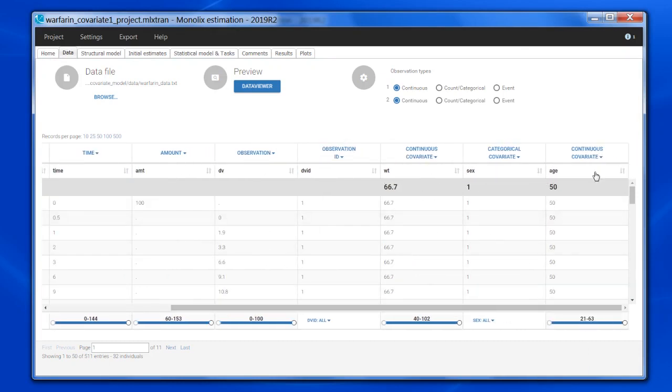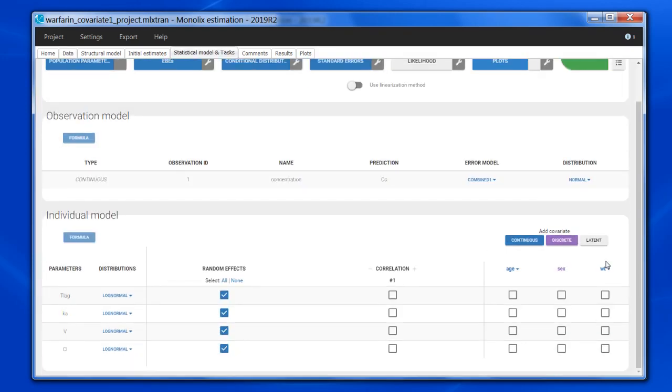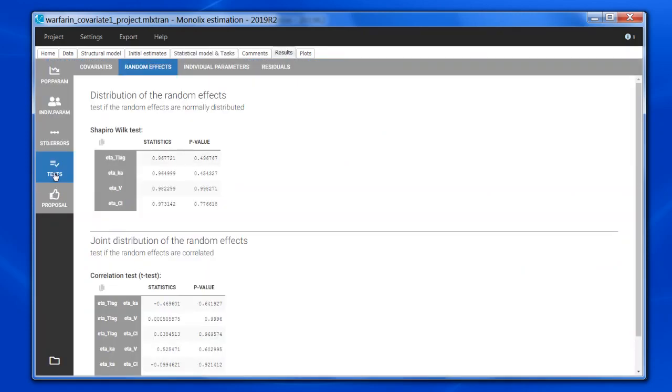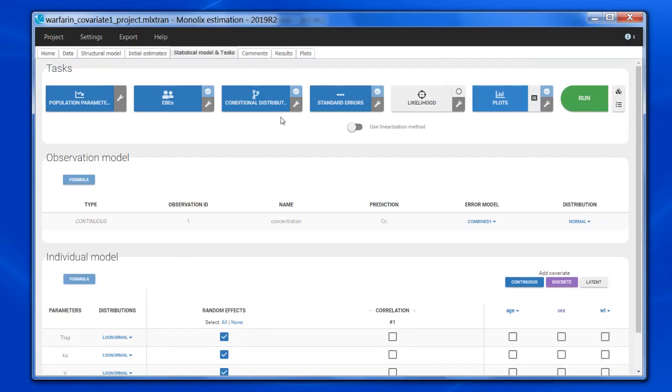Weight, sex and age have been tagged as covariates and are not yet included in the model. The tests are displayed in the tab Result tests. They are calculated at the same time as the task Conditional Distribution, so you need to run this task first in order to see the tests.